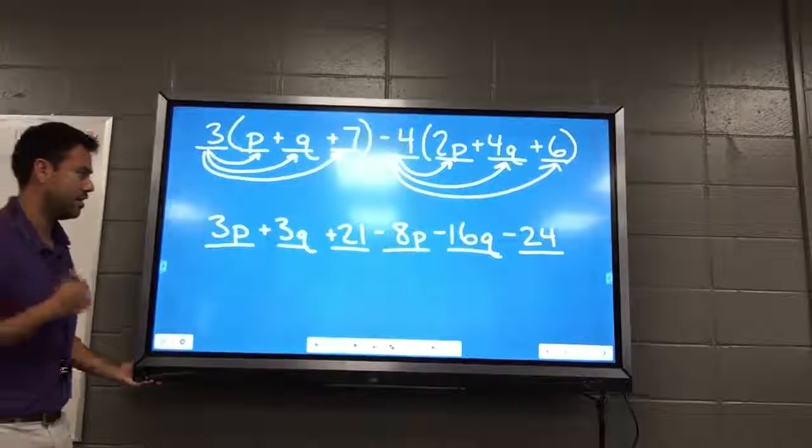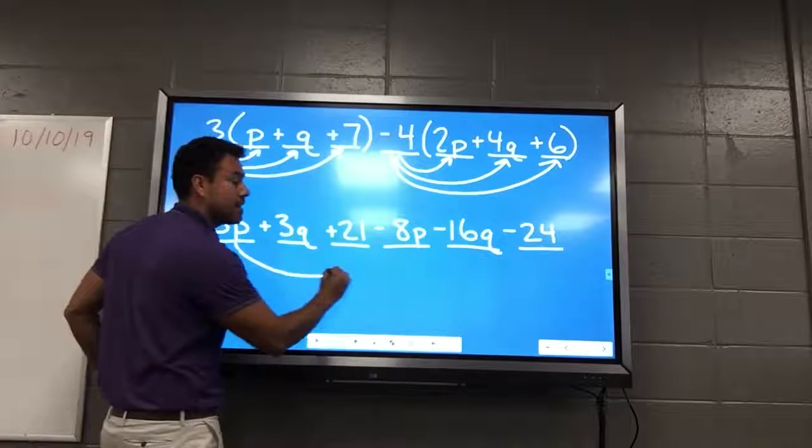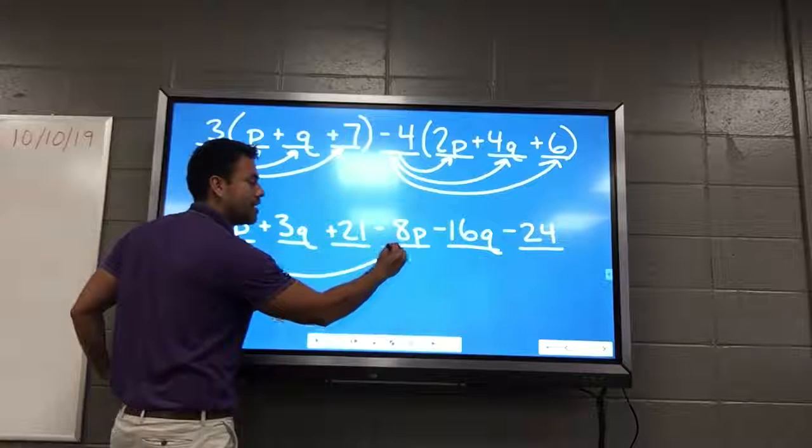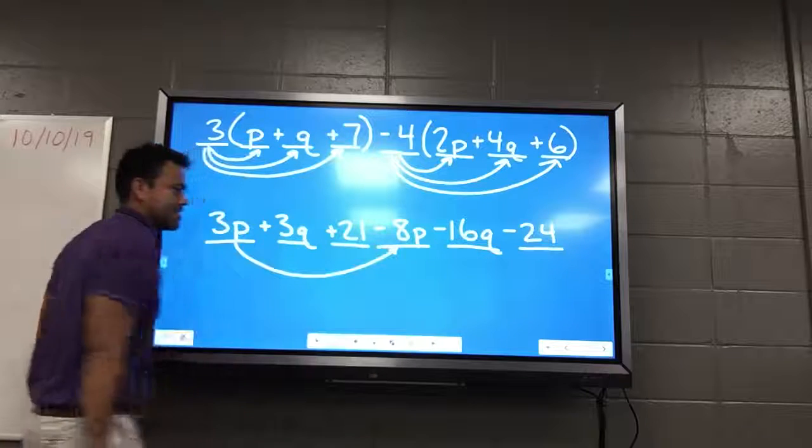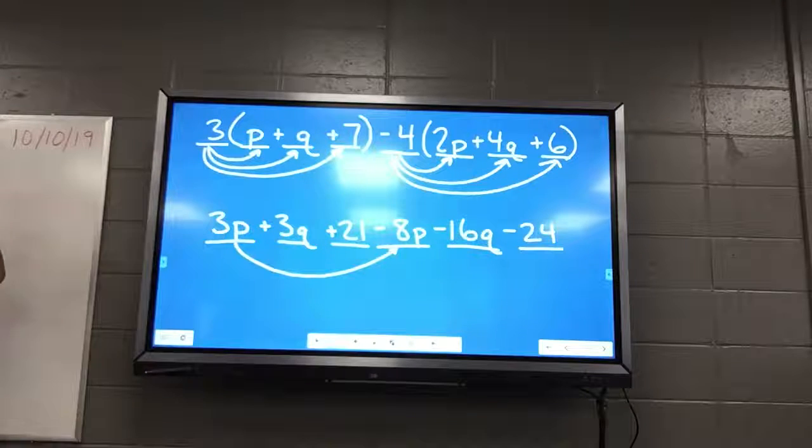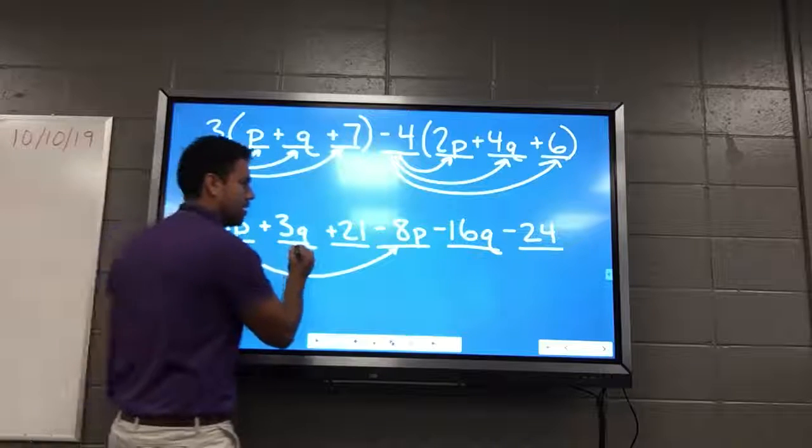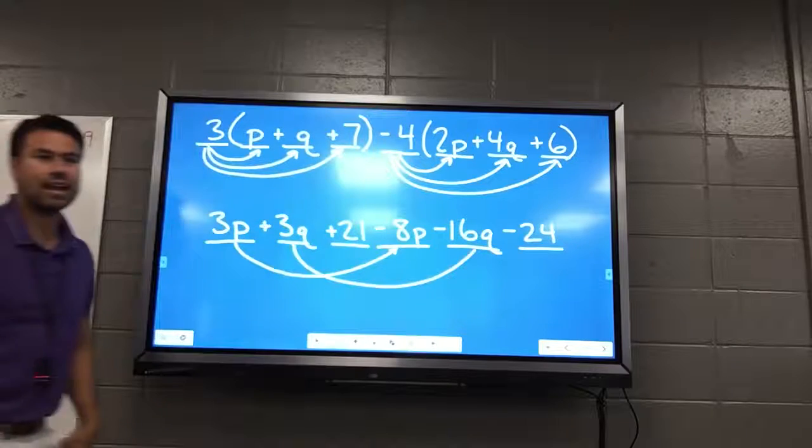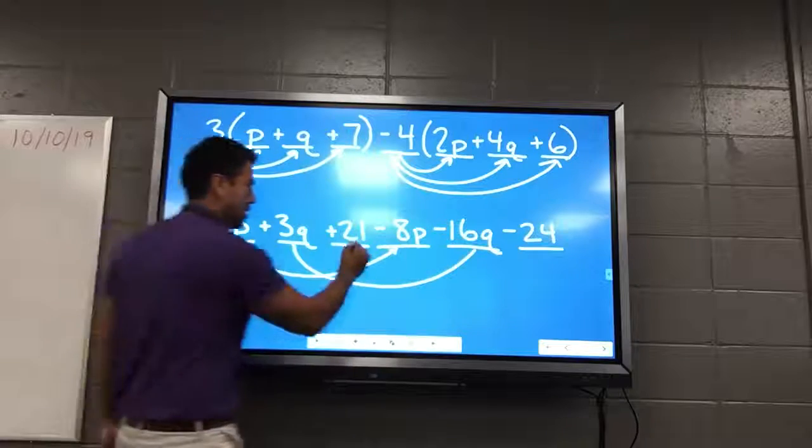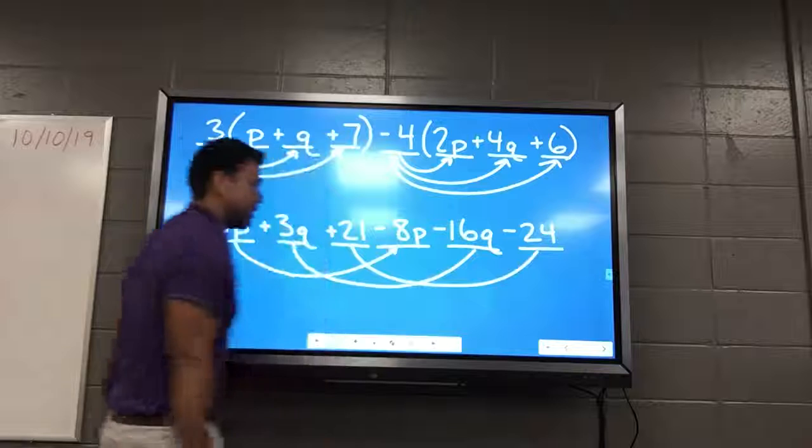3p and 8p. 3p and... 8p. 8p history. Sorry? 3p and... 8p. Negative 8p. Negative 8p. Good. And that means something because it's going to change the sign. Madison? 3q and negative 16q. 3q and negative 16q. That's correct. And I have Tyler. 21 and negative 24. Good. 21 and negative 24. Good.